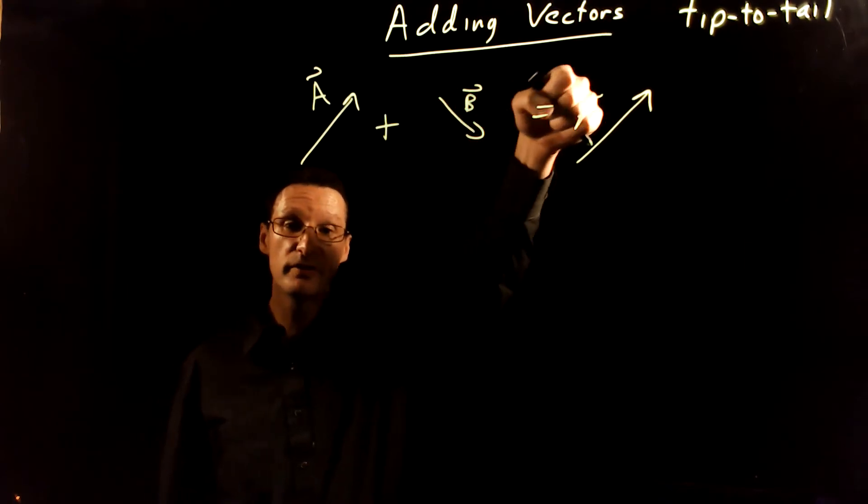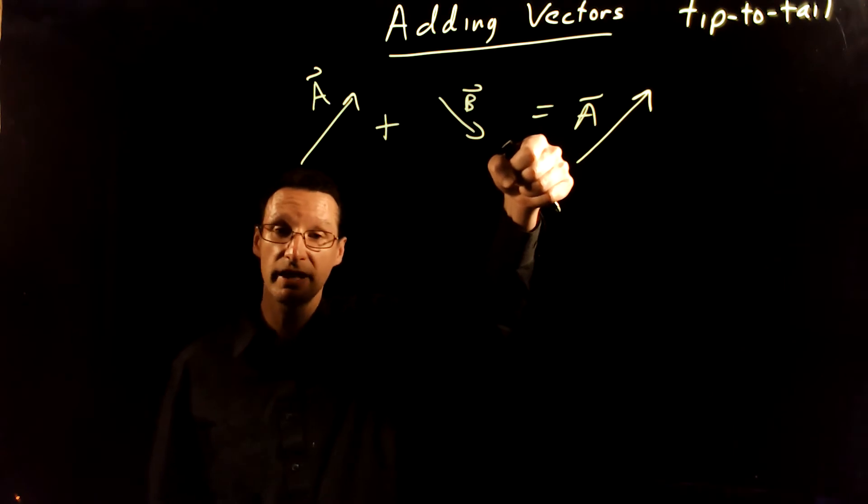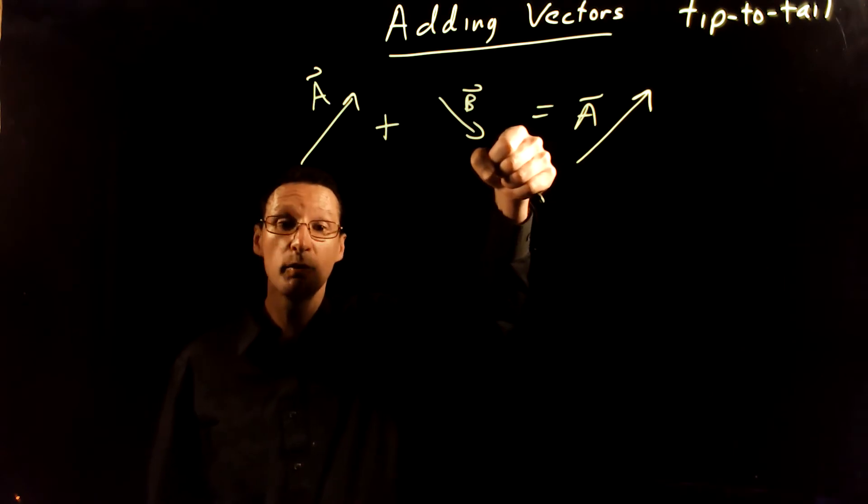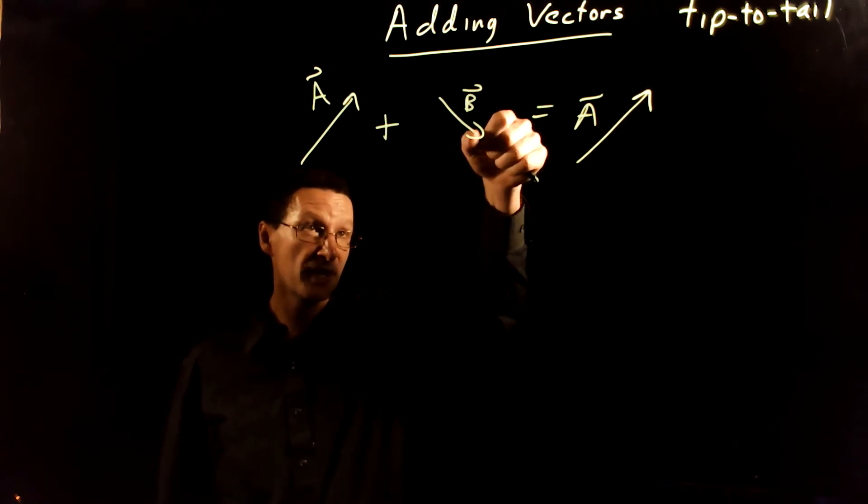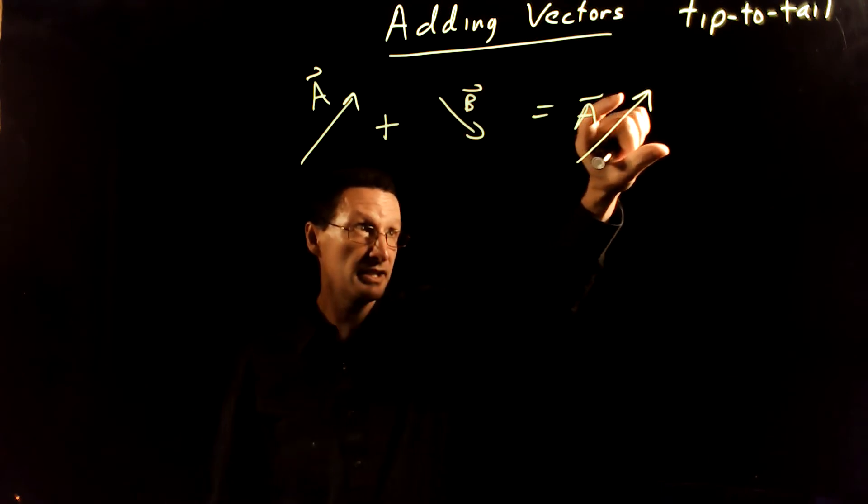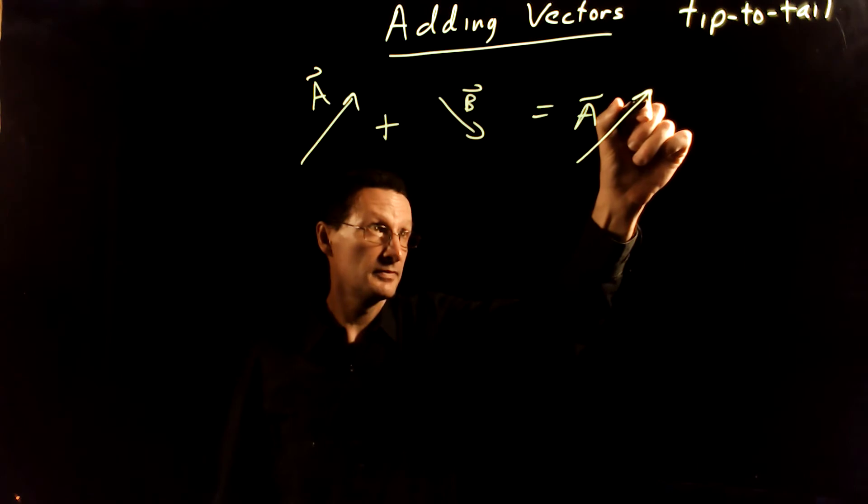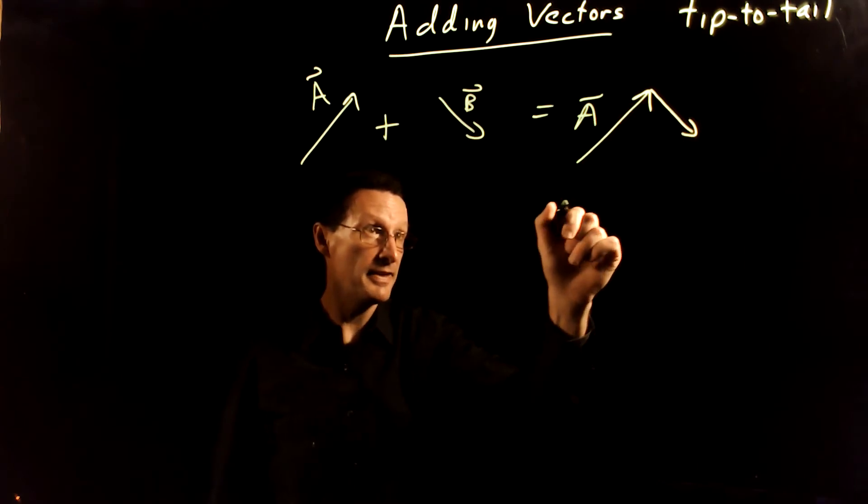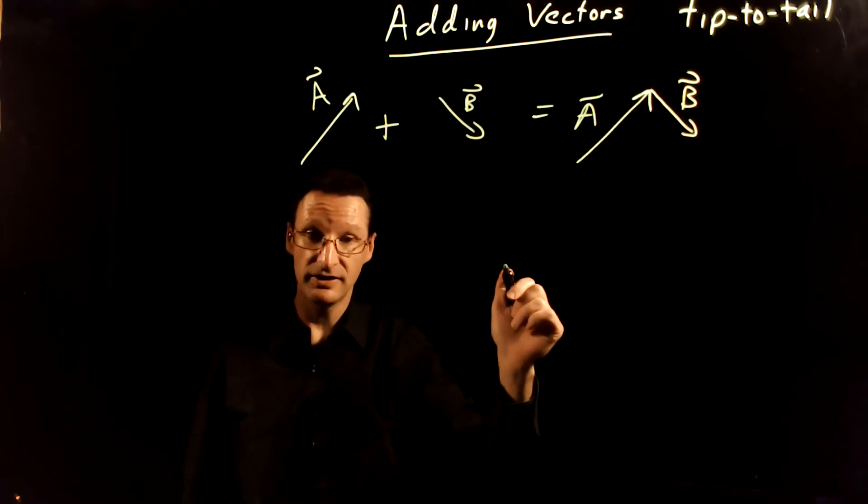And with vectors, we're free to move these around. As long as we don't change the direction or change the length, we can move them wherever we want. So we're going to move the tail of B to the tip of A like that. And then the resultant,